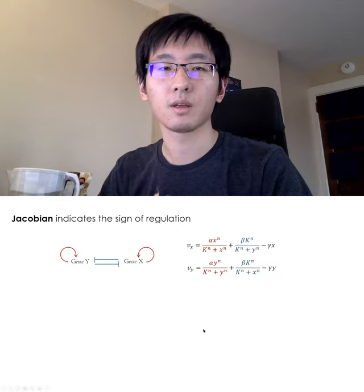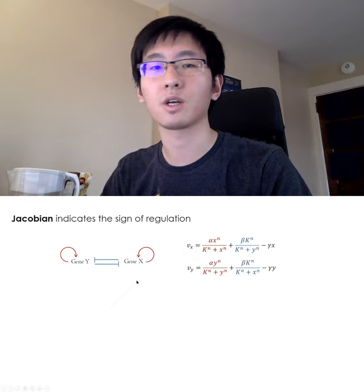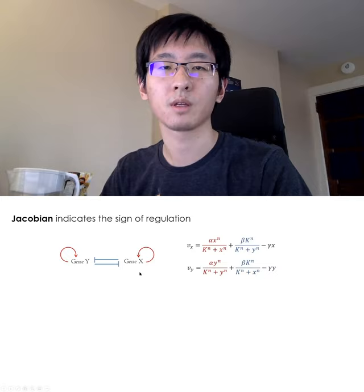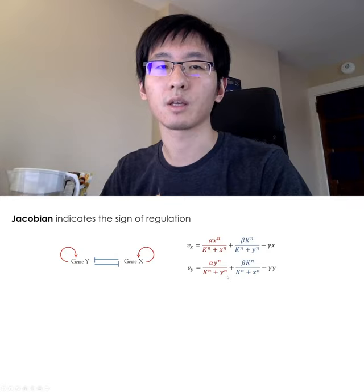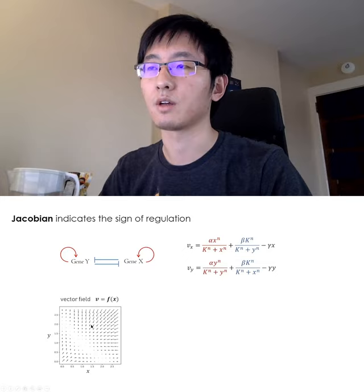The vector field not only provides us with continuous and smooth velocity vectors — with the continuous vector field function we can also compute derivatives, which is the so-called Jacobian matrix. As an example, here we have gene X and gene Y. There are two self-activating genes which mutually inhibit each other. This forms a toggle switch motif. Their expression rate can be modeled with an activating and inhibiting field function plus their own degradation terms. Here is the vector field of the two-dimensional system. You can see all the velocity vectors converging towards these fixed points.